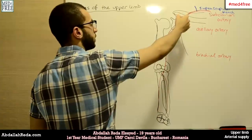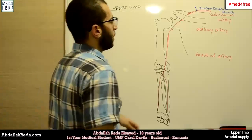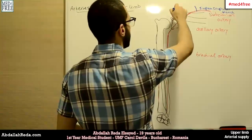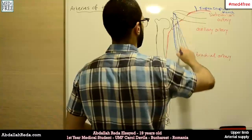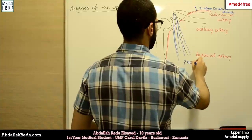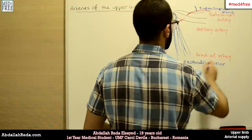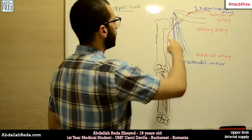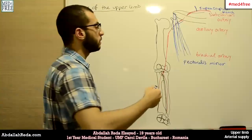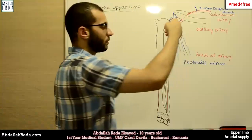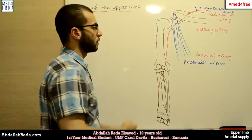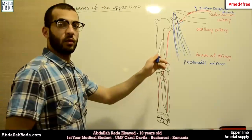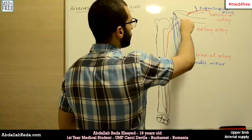Then the subclavian artery, as we mentioned, goes beyond the clavicle and becomes the axillary artery. At that point, there is a muscle that divides the axillary artery into three regions — pectoralis minor. So pectoralis minor divides the axillary artery into three portions: the first portion before the muscle is called the suprapectoral region, the one the muscle covers is called the infrapectoral region, and the one after the muscle is called the retropectoral region.